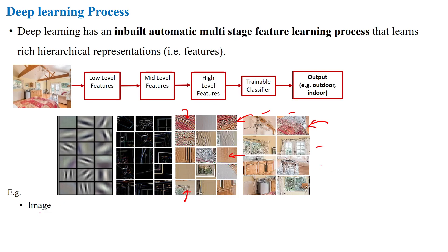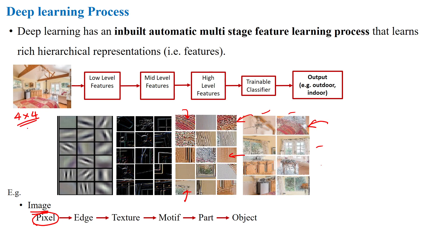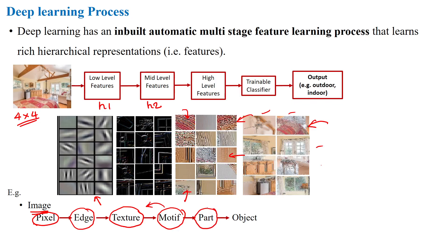When passing an image into the deep learning architecture, the pixel intensities are given into hidden layer 1, which extracts edges from each image. Hidden layer 2 then extracts the texture from those features extracted by the previous layer. Then it extracts the motif of the given image, and finally identifies what is the part of that image.